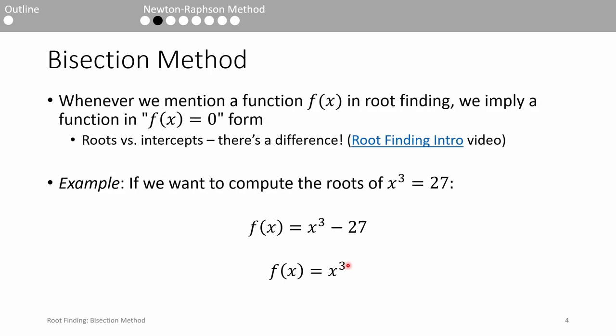Before we progress, I want to hammer in the point that whenever we talk about a function in root finding, we are implicitly talking about a function in f(x) = 0 form. What this means is that the function we're trying to find the root of has 0 on one side of the equal sign. For instance, if we wanted to solve x³ = 27, what we are really doing is finding the root of the function x³ - 27.